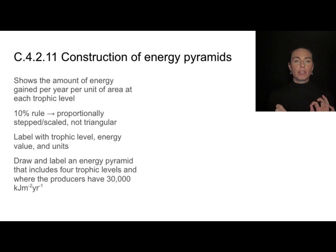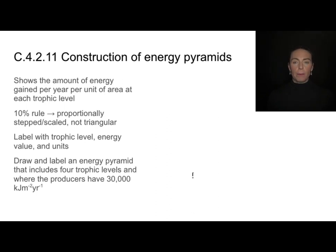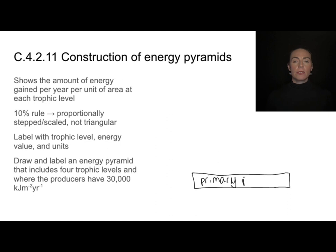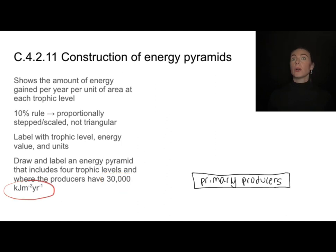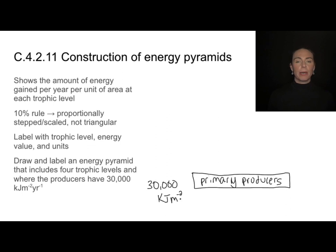We're going to label it with the trophic level, the energy value, and the units. We'll start off with the base of our food chain, which is always the primary producers. In this ecosystem, primary producers have 30,000 kilojoules per meter squared per year. The units mean kilojoules of energy per meter squared per year — it's the amount of energy produced per meter squared every year.